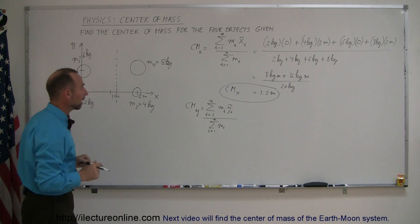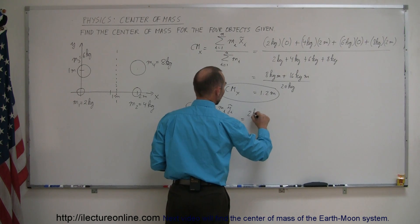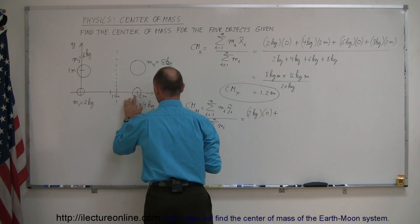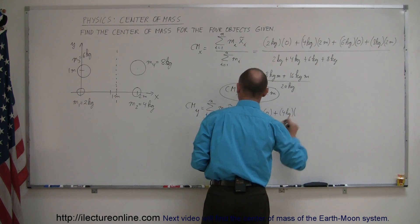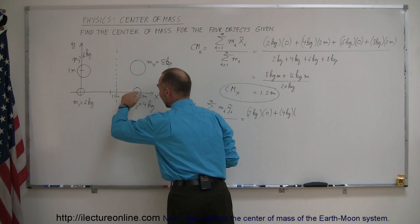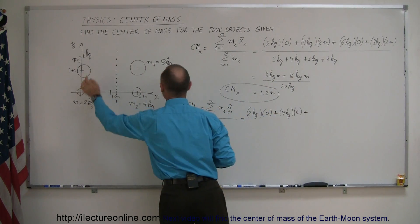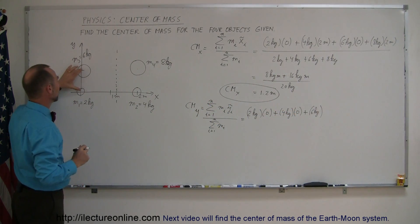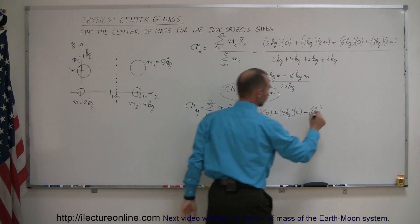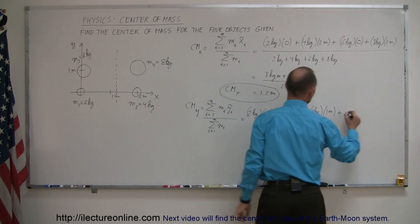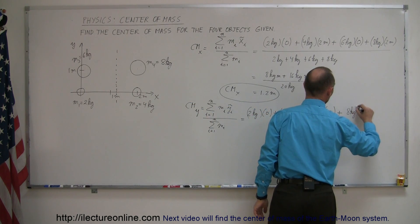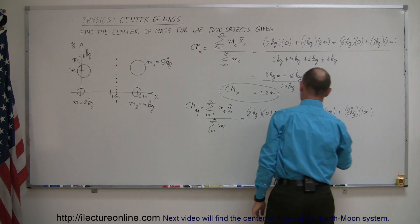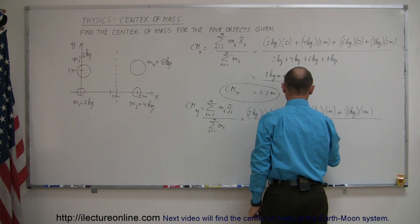Starting with mass 1, that's 2 kilograms times its y-coordinate center of mass — since it's at the origin, that's 0. Plus the second mass, 4 kilograms, times its y-coordinate — since it's on the x-axis, that is also 0. Plus the third mass, 6 kilograms — that one is above the x-axis, 1 meter above, so its center of mass in the y-direction is 1 meter. Plus the final mass, 8 kilograms, which is also 1 meter above the x-axis, so its center of mass in the y-direction is also 1 meter. We divide the whole thing by the total mass of 20 kilograms.